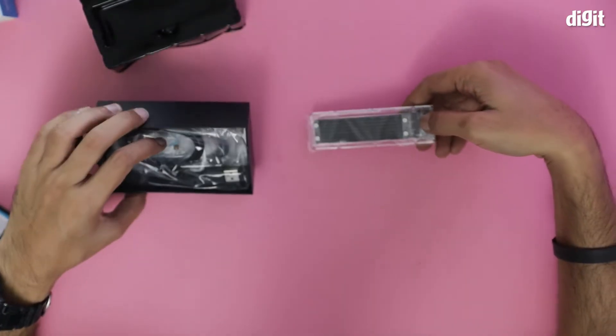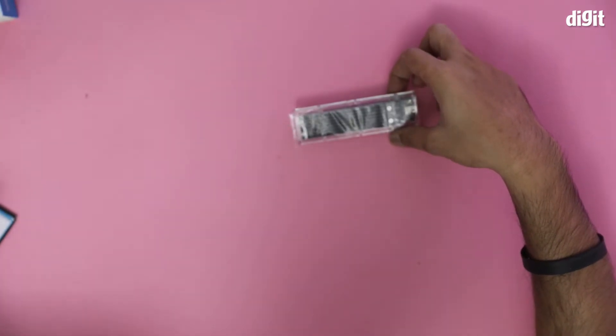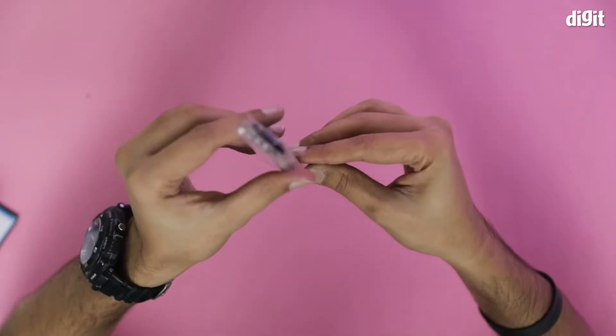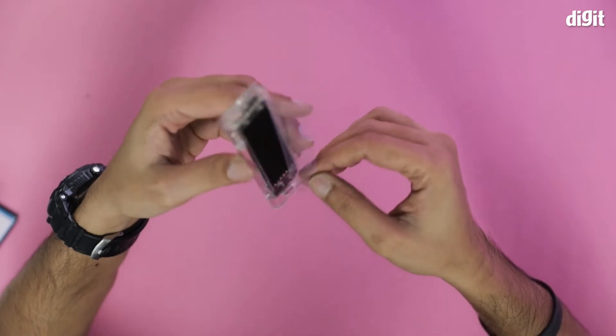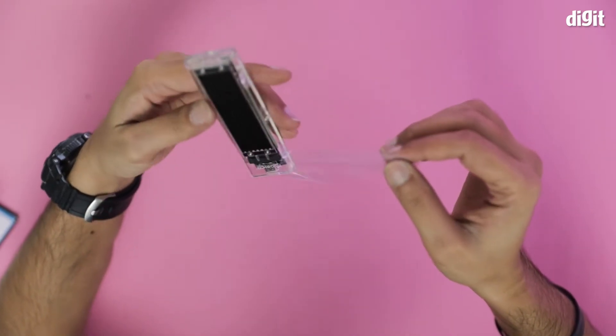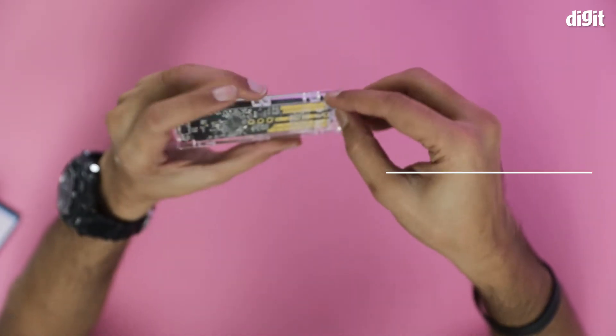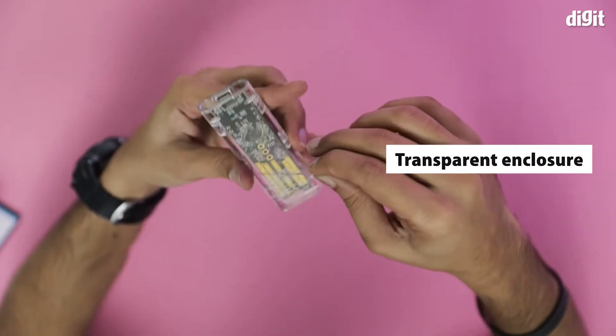There's a lot of other stuff here but let's take a look at this first. So yeah, this is what the enclosure looks like. It does not contain the SSD itself but it supports, you can see, it's a transparent case.